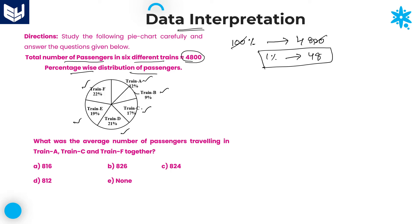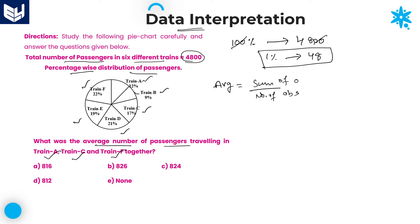Now look at the first question. The first question is: what was the average number of passengers travelling in trains A, C, and F? We need to calculate the average number of passengers in trains A, C, and F together. As we know, average is equal to sum divided by number of observations.